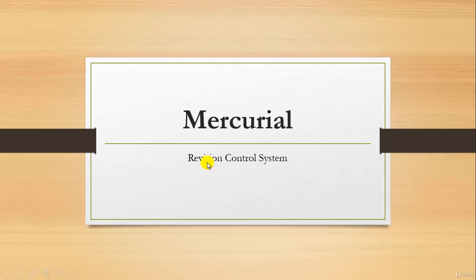Mercurial is a revision control system or version control system, similar to git, which is a popular version control system. In this tutorial, we're going to learn all about Mercurial, starting from scratch, understanding the environmental setup and many more.